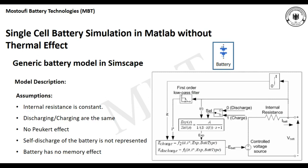The next assumption is that the discharging and charging processes are considered the same, but in reality these processes are quite different. There is also no Peukert effect in this model. The Peukert effect defines that a battery's real capacity differs when discharged at different rates — discharging at a higher C-rate gives slightly less capacity than at a lower C-rate. Additionally, the self-discharge of the battery is not represented, and the battery has no memory effect.